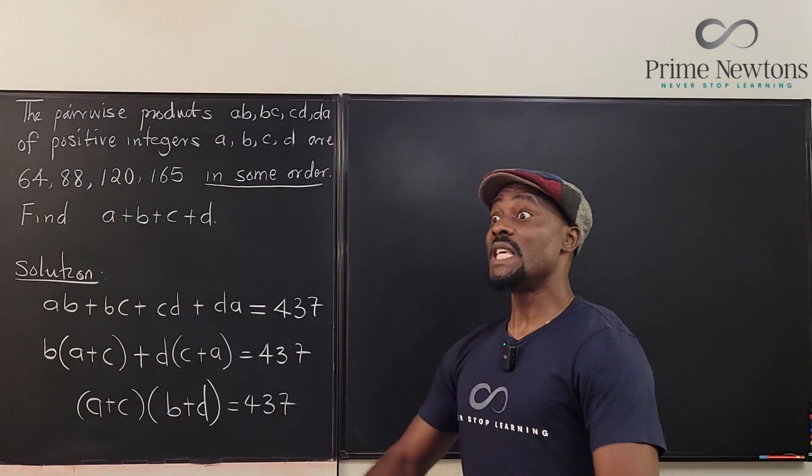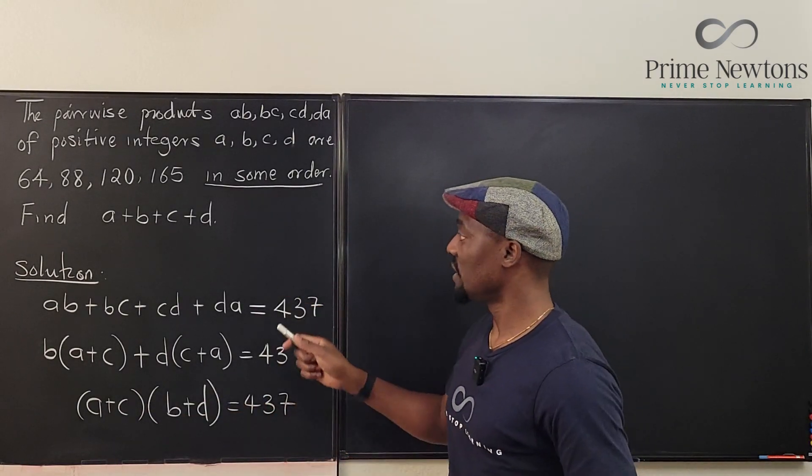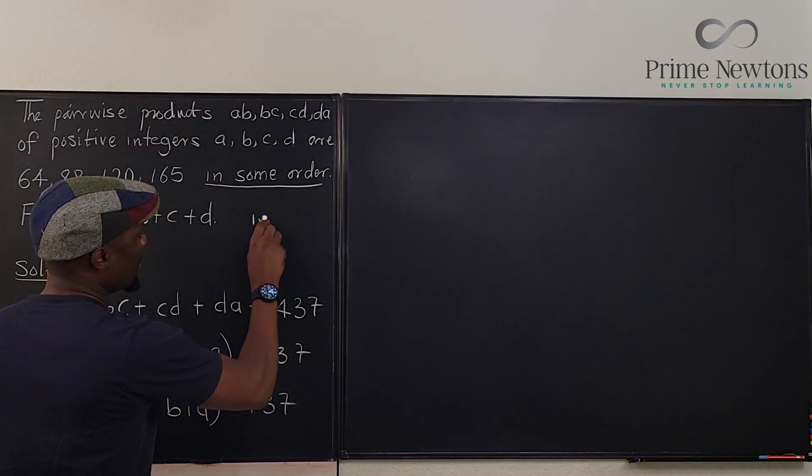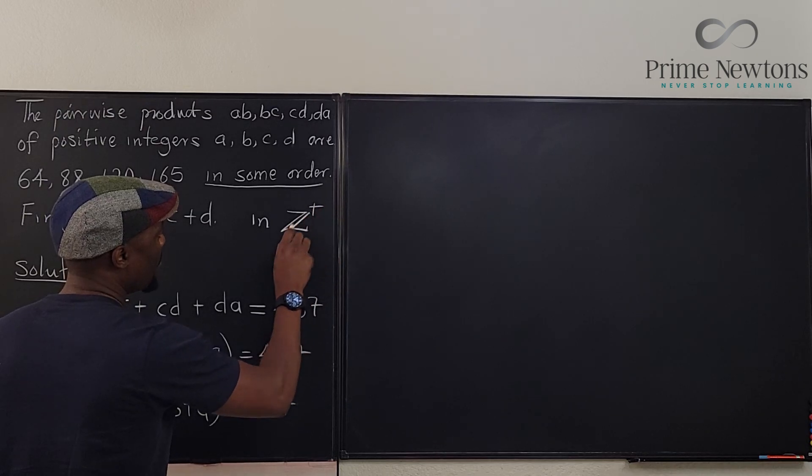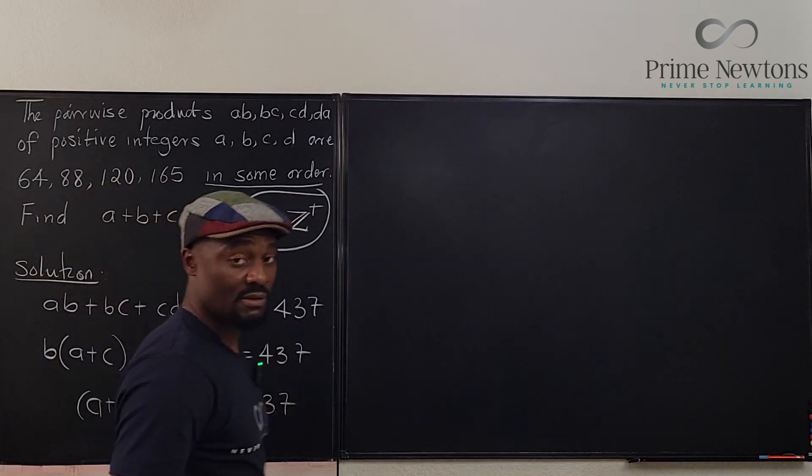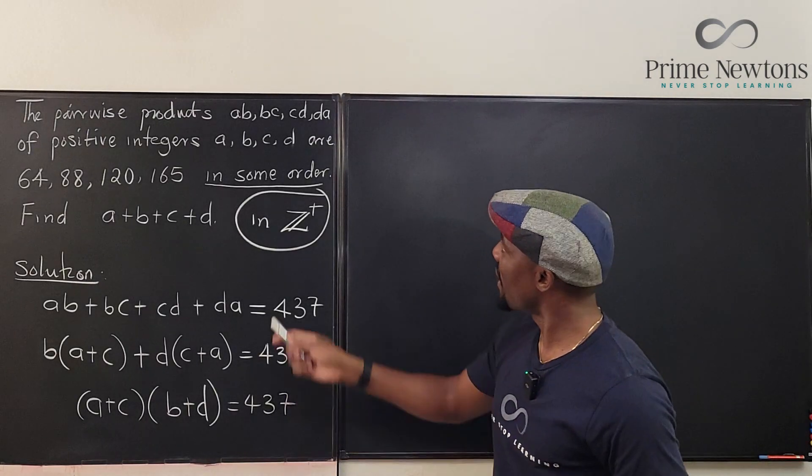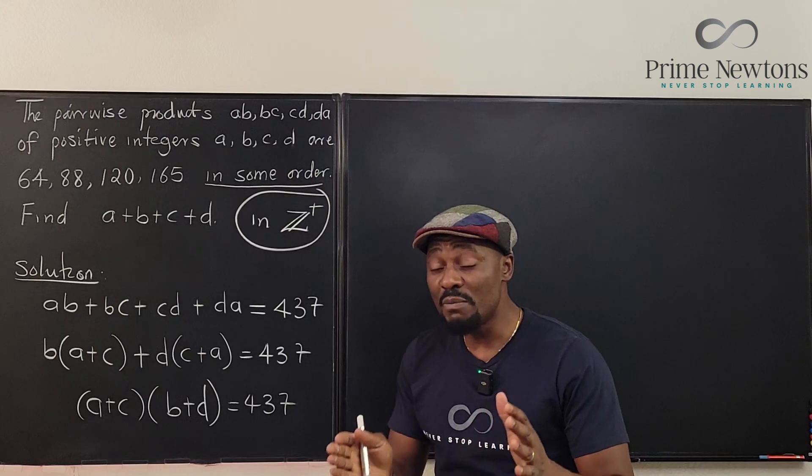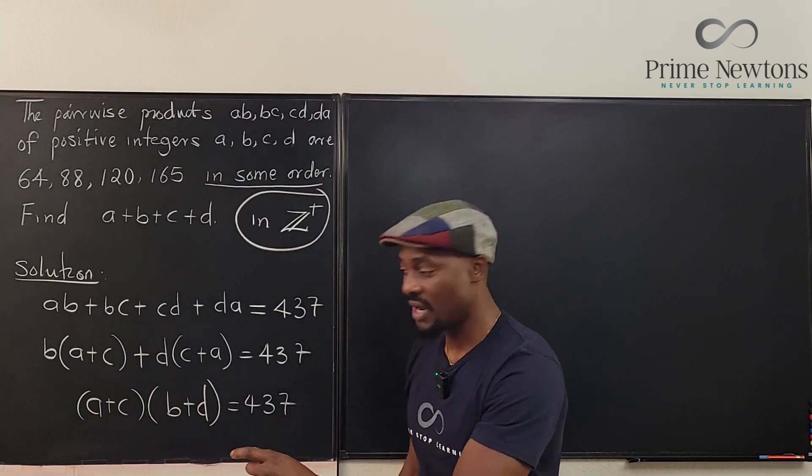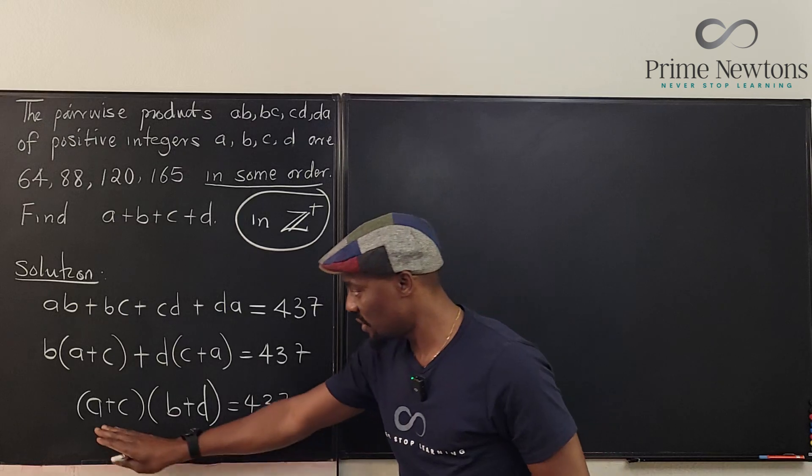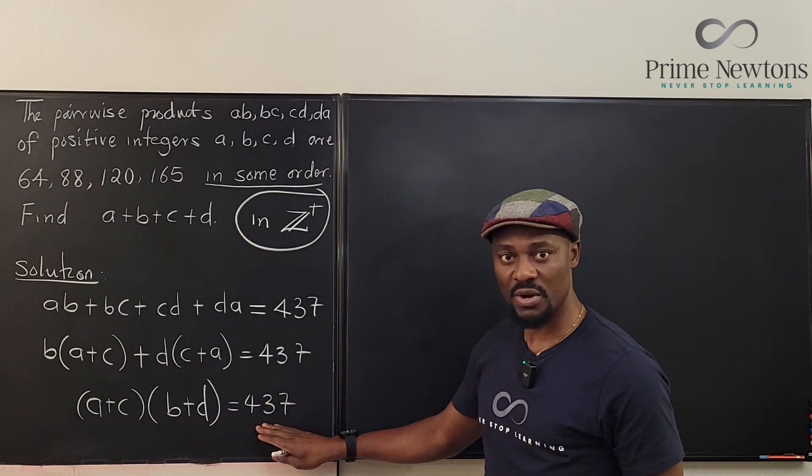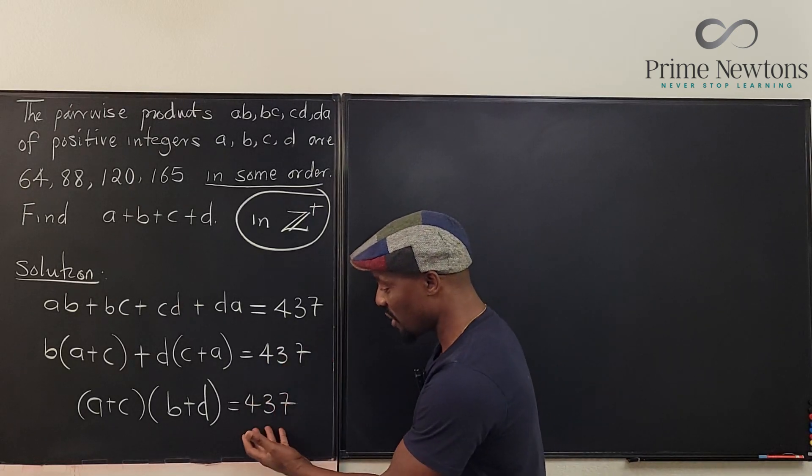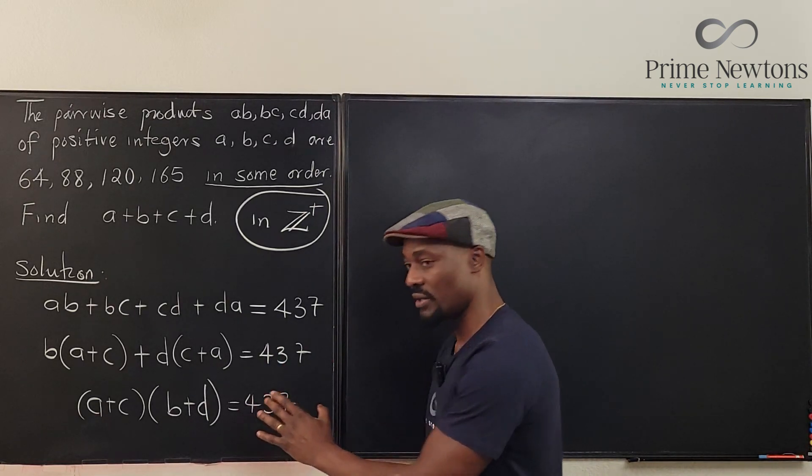This is an easier problem than what you would have had if we were not dealing with positive integers. We're dealing with positive integers. That's an essential fact. Because the sum of two integers is an integer, this is the product of two integers giving us this number, 437. All you need to do is find all the possible combinations of products that are going to give you 437.